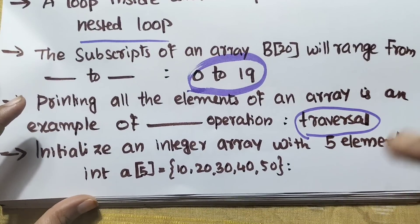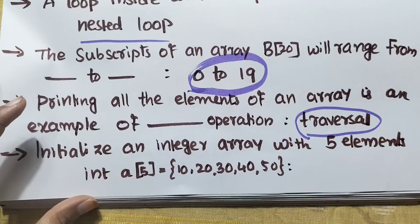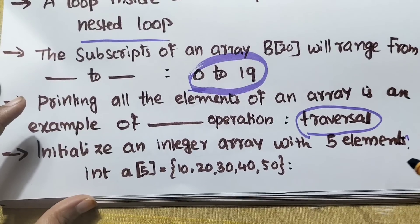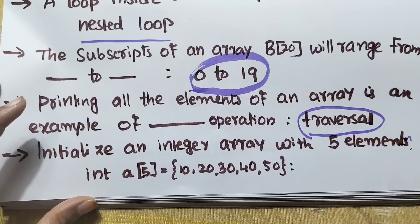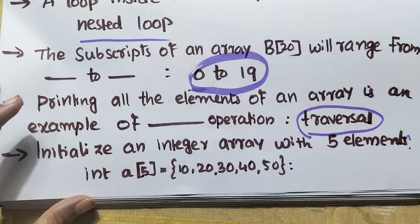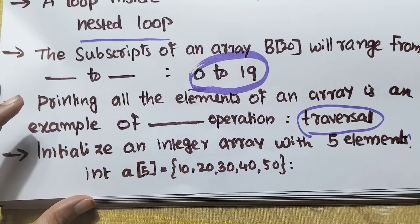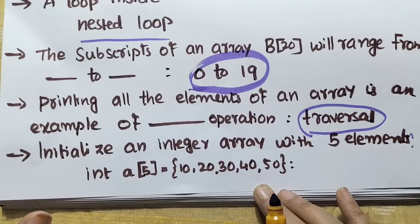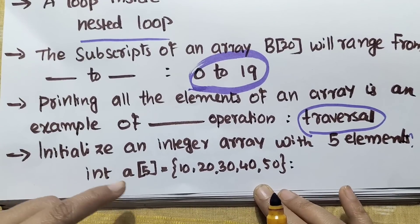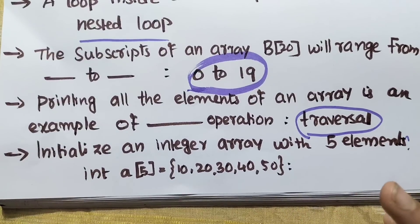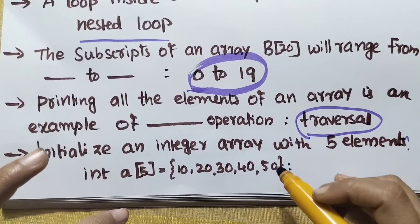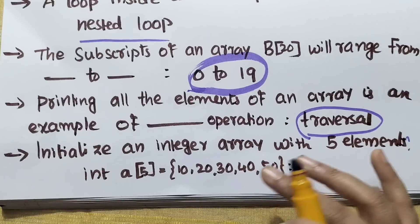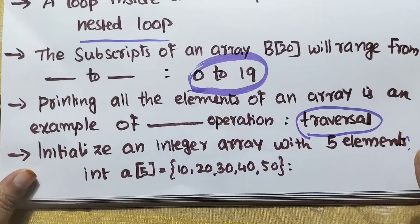Initialize an integer array with 5 elements. In this case, you can create an array with the values 20, 30, 40, 50 — it has five elements.